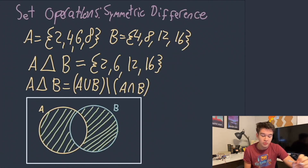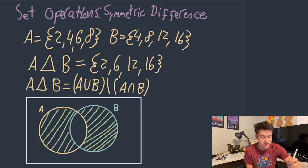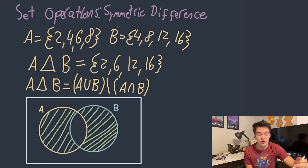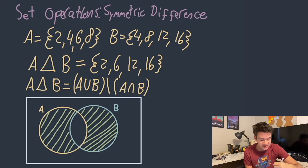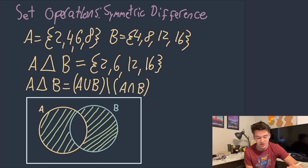From there we can take it a step further and use something called symmetric difference. Symmetric difference takes two sets and asks which elements are only in one of these sets — it's essentially the opposite of an intersection. We can see that shaded in as all the elements of A and all the elements of B except for the ones in the intersection in the middle. We can also write that out as A union B, then symmetric difference with A intersection B.